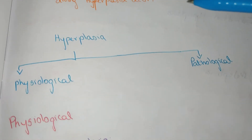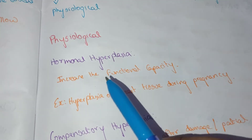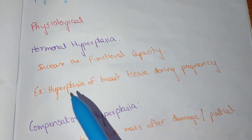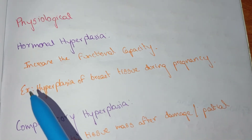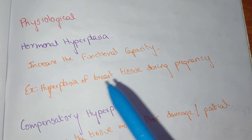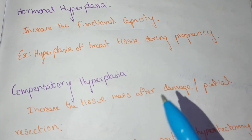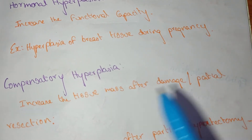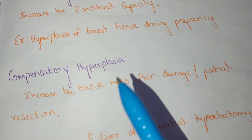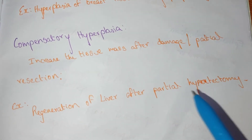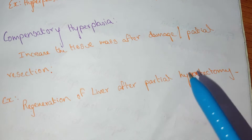Hyperplasia can be physiological or pathological. Physiological hyperplasia includes an increase in functional capacity, and compensatory hyperplasia — after damage or partial resection of an organ, the remaining cells will divide and regenerate. For example, regeneration of the liver after partial hepatectomy: the liver cells will divide to compensate.